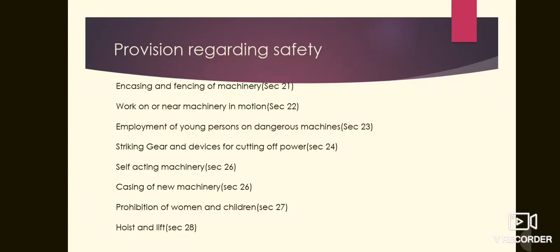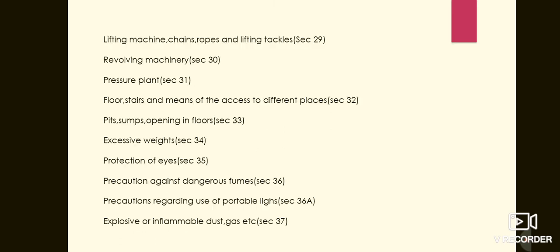Hi students. Last session we ended with hoists and lifts, which is one of the provisions regarding safety of employees or workers in a factory. Now we are moving on to another provision: lifting machines, chains, ropes and lifting tackles.